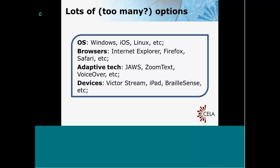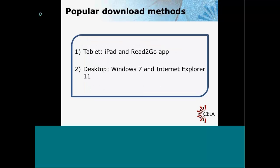I just highlight this to let you know that there are all these different kinds of combinations out there. What I want to do today is cover two popular download methods for our DAISY audiobooks. The first is using a tablet — an iPad — and the Read2Go app. The second will be using a desktop with Windows 7 and Internet Explorer 11, which is a fairly common setup for our clients.